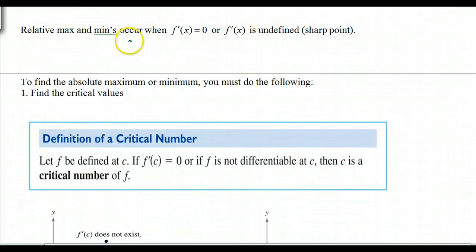So relative max and min. So now I'm using the word relative. So we're going to find all these possibilities by looking at when f prime of x is equal to zero or f prime of x is undefined. Possible sharp point could be some other things too. So we want to find the absolute max or min. You must do the following. Find the critical values. That's step number one.